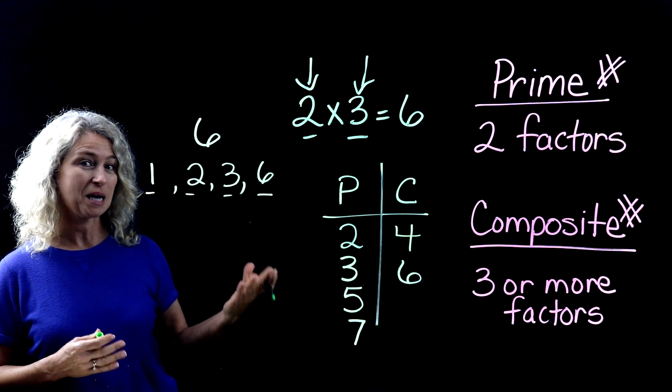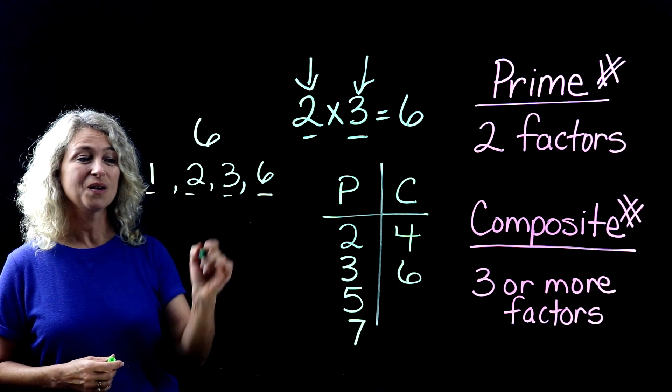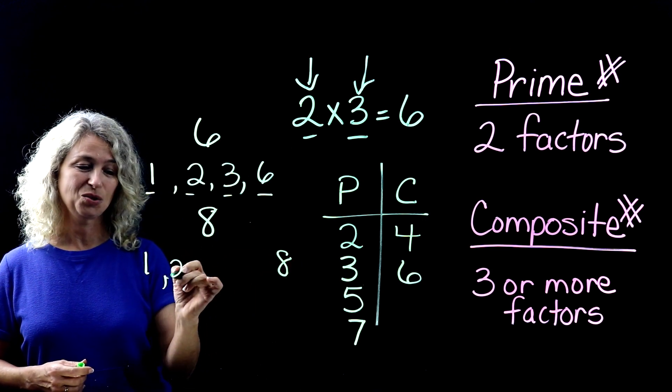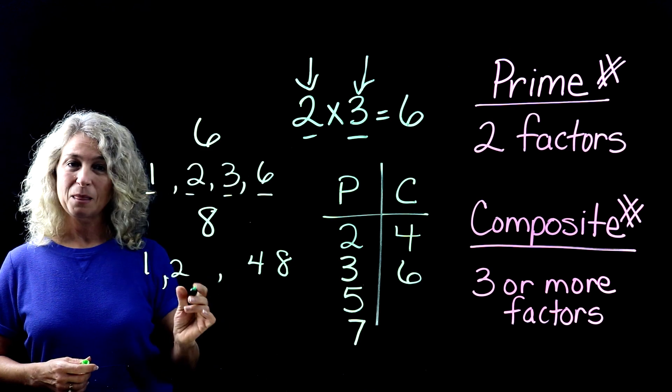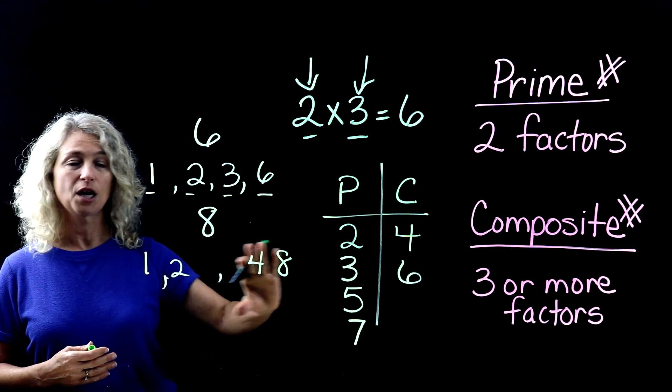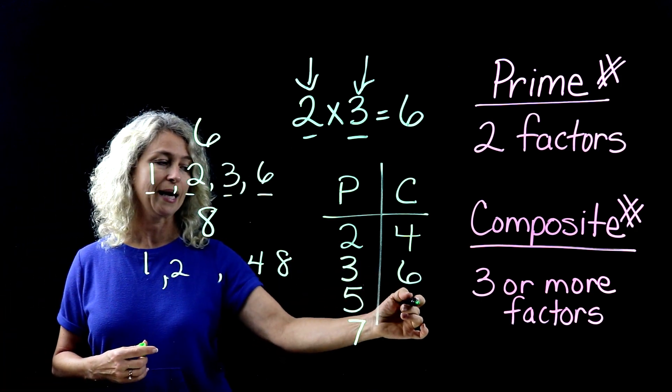And the same thing with eight. I bet you already know that listing with eight, one times eight, two times four. Is there anything times three or times four that's already listed? So here are four factors. So eight is composite.